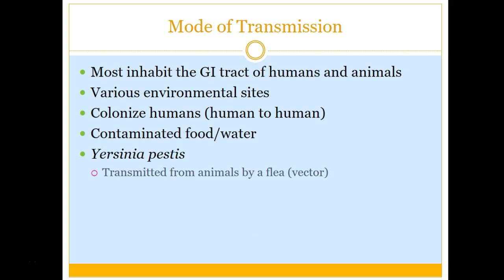As far as mode of transmission, when you look at the term Enterobacteriaceae, it means intestines. A lot of these bacteria normally inhabit the GI tract as colonizers, but when they cause disease or infection, a lot of things are coming through contaminated food or water. In the case of Yersinia pestis, they're passed by a flea off of an infected animal.